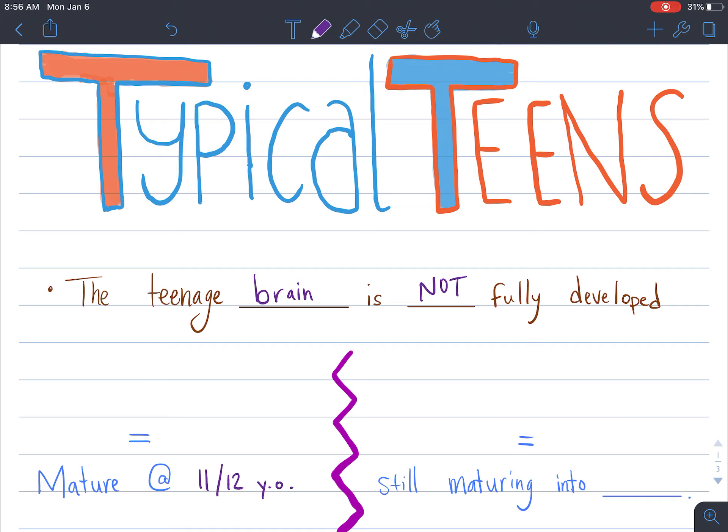That is our limbic system. So the limbic system is what children develop over their childhood.